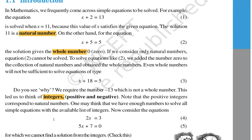Whole numbers means 0, 1, 2, 3 and so on. And negative numbers means minus 1, minus 2, minus 3 up to minus infinity. So integers, whole numbers, and natural numbers — are you clear?